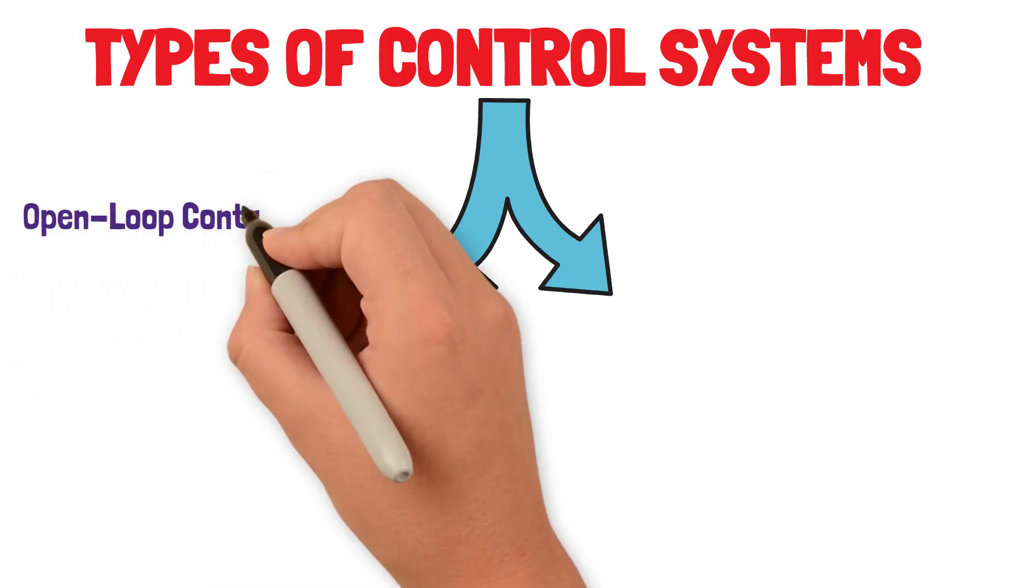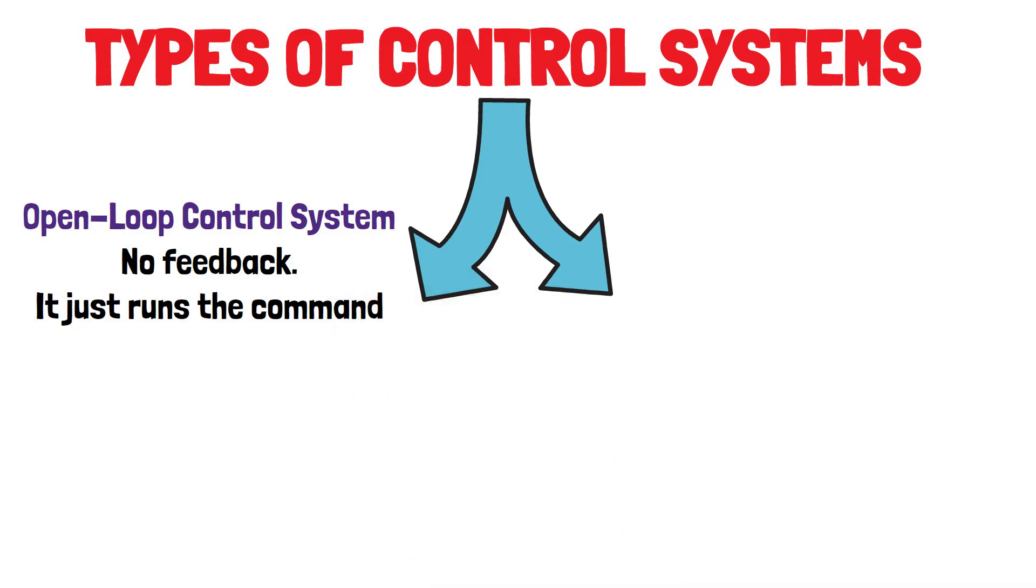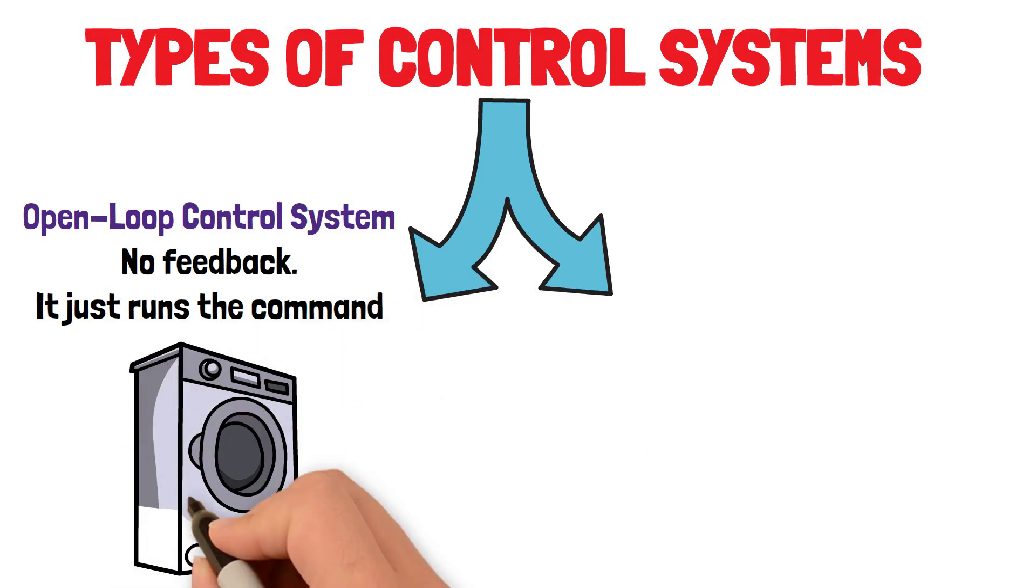Open loop control system. No feedback. It just runs the command. Example: a washing machine that runs for 30 minutes no matter how dirty the clothes are.